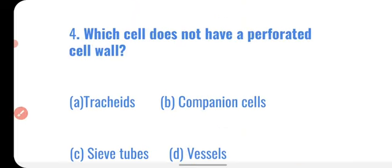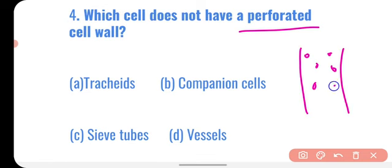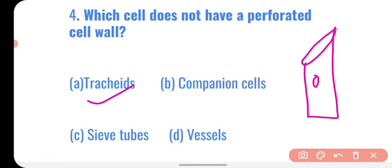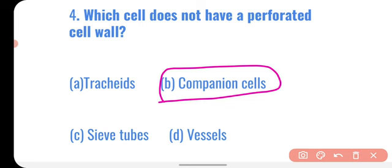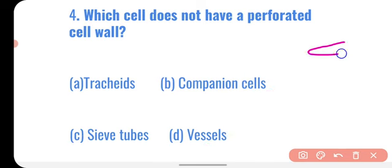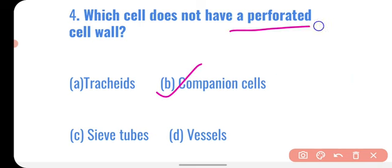The next question: which cell does not have a perforated cell wall? Options are tracheids, companion cells, sieve tubes, and vessels. Tracheids have perforated cell walls. Sieve tubes have perforations in upper and lower cell walls. Vessels also contain holes and openings. Only companion cells, found in the phloem, do not have a perforated cell wall. So the correct option is companion cells.